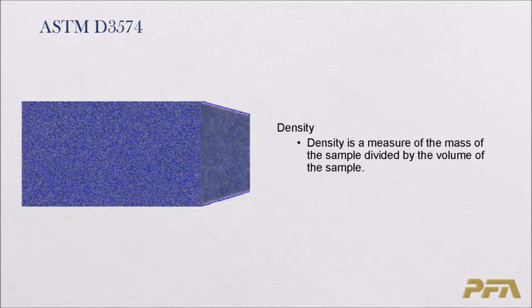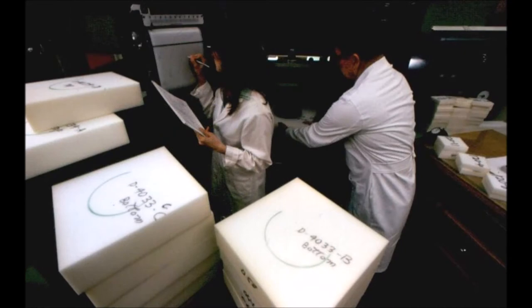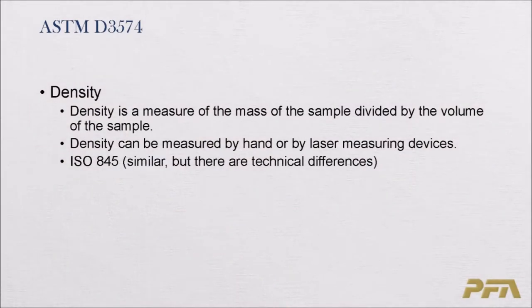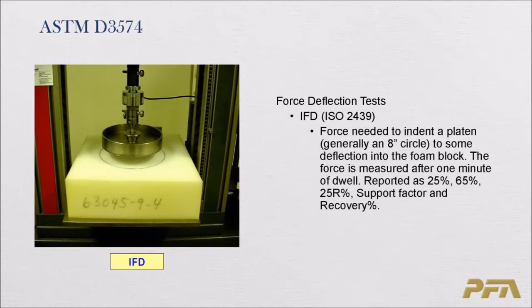We start with Test A in ASTM D3574: density. Density is straightforward — it's the mass of the sample divided by the volume of the sample. Density can be measured by hand or by laser measuring devices. The ISO equivalent is ISO 845; they are similar with some minor technical differences.